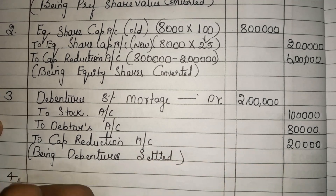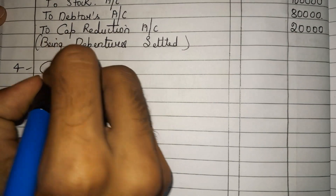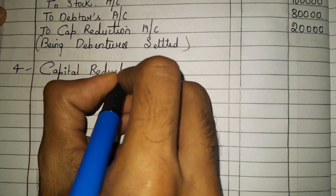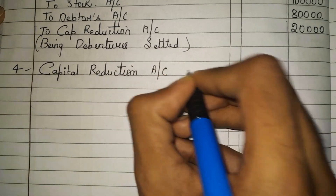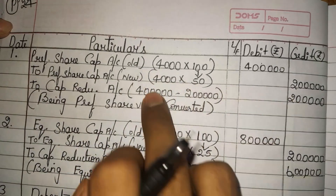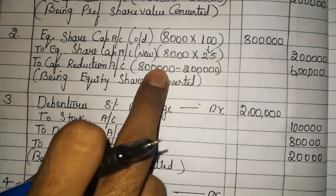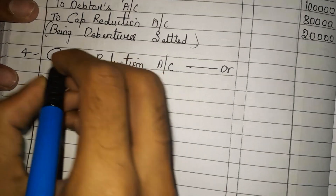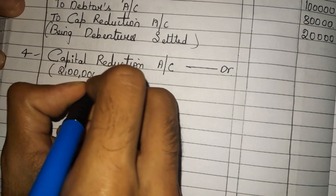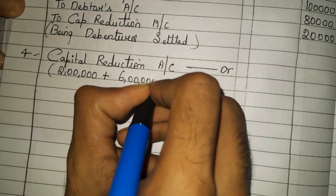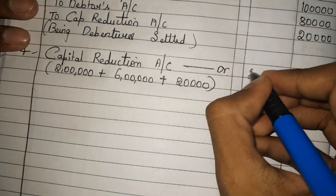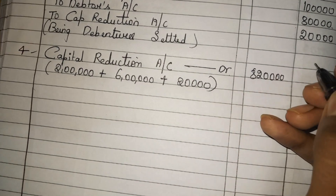Now the last entries need to adjust the capital reduction account by debiting it. In the first journal entry we transferred 2 lakh, in the second entry 6 lakh, and in the third entry 20,000 to capital reduction account. Adding these together: 2 lakh plus 6 lakh plus 20,000 equals 8 lakh 20,000.